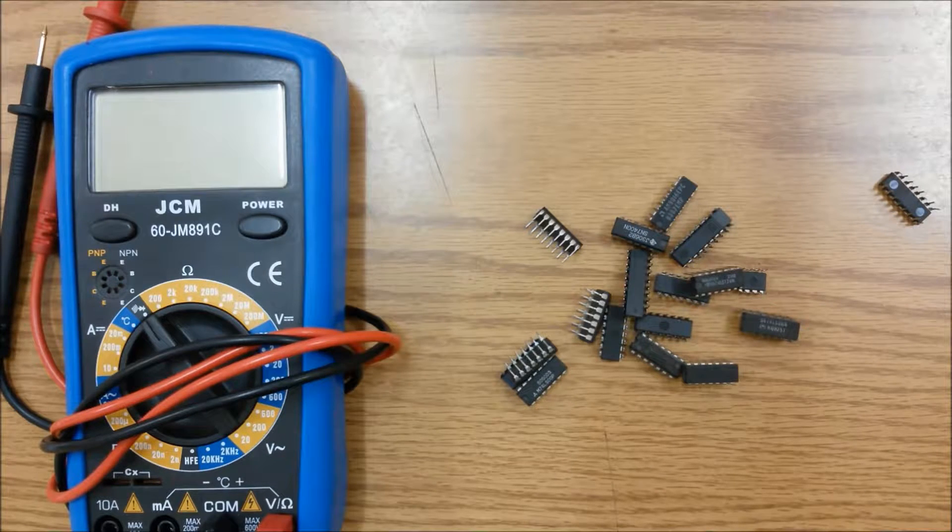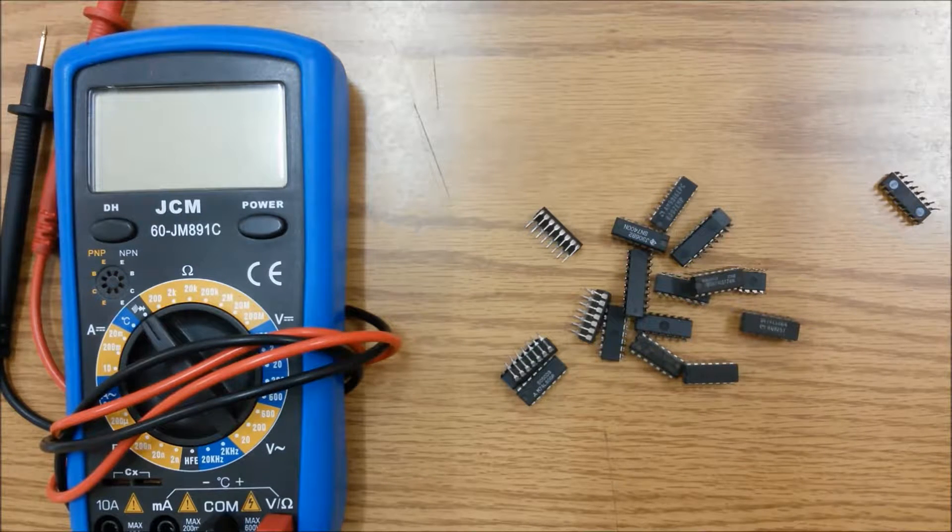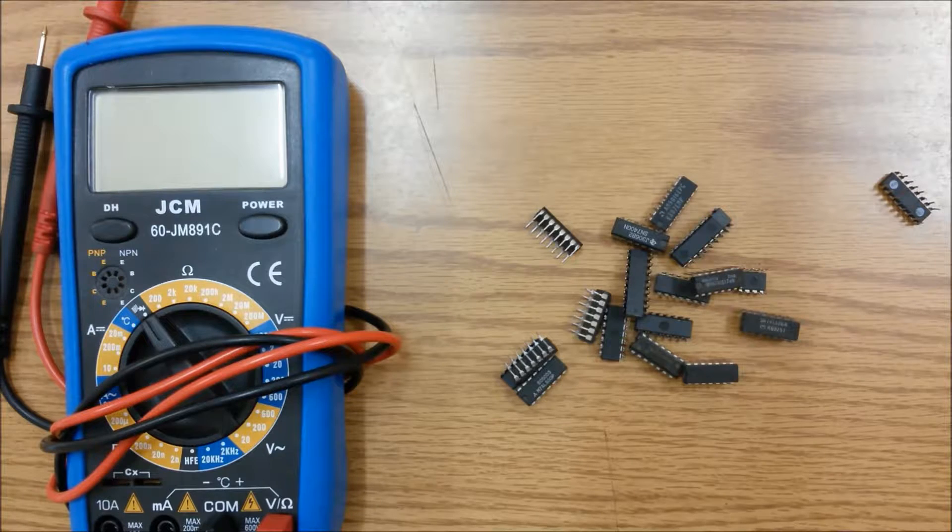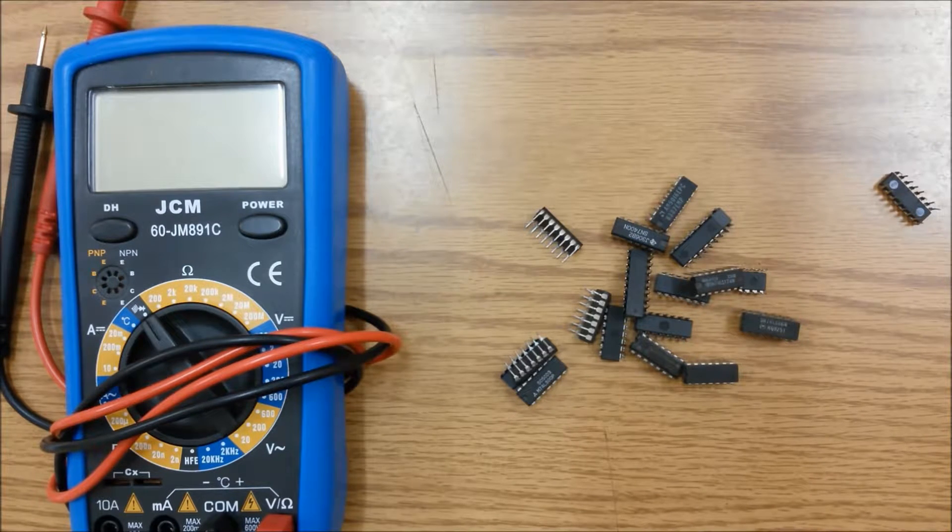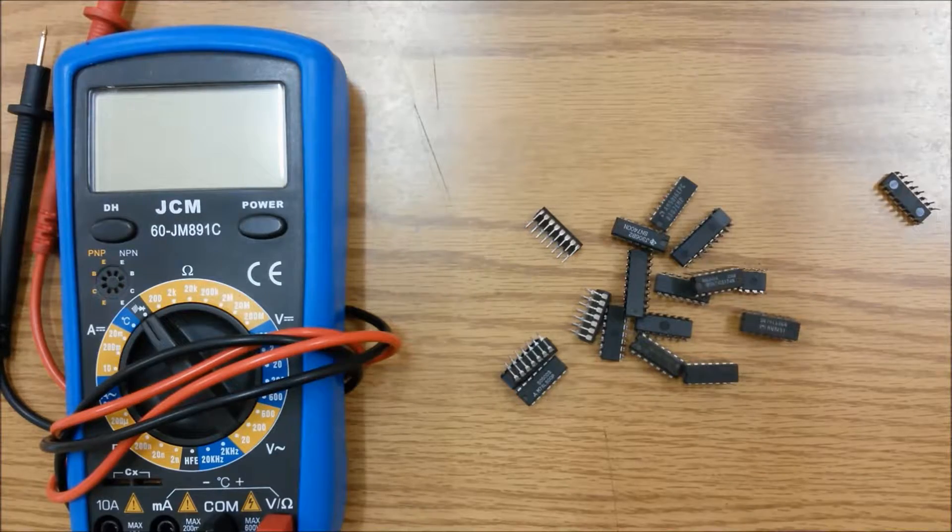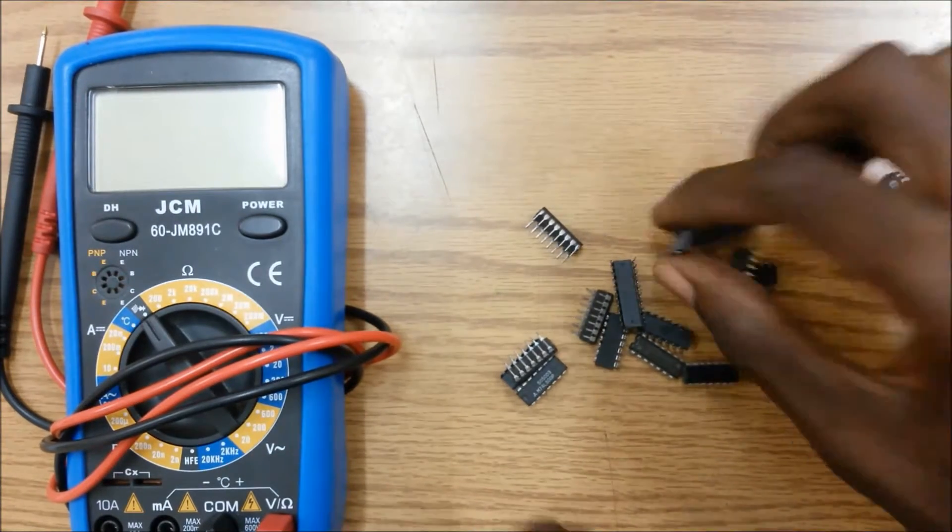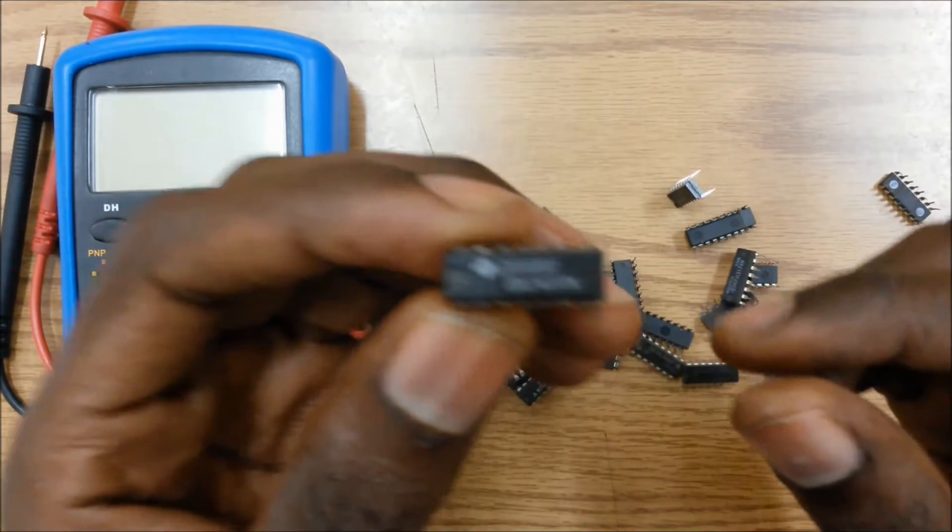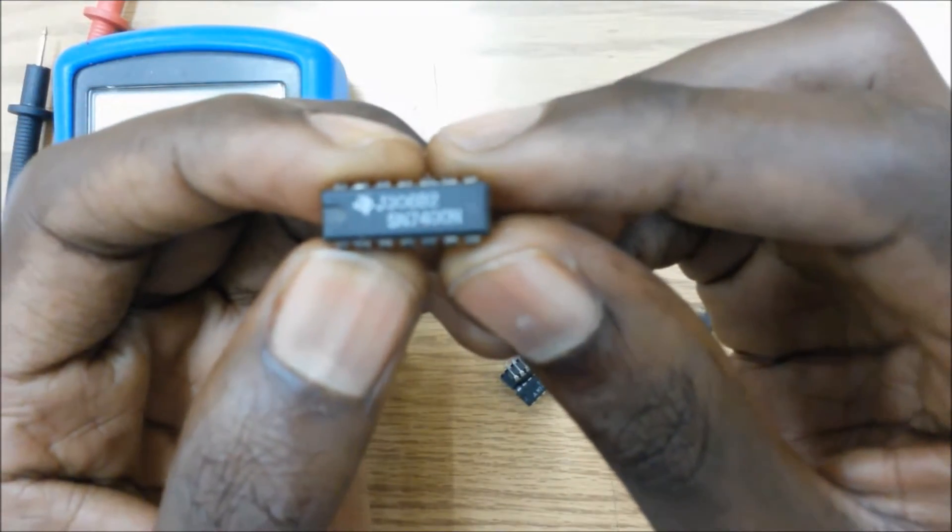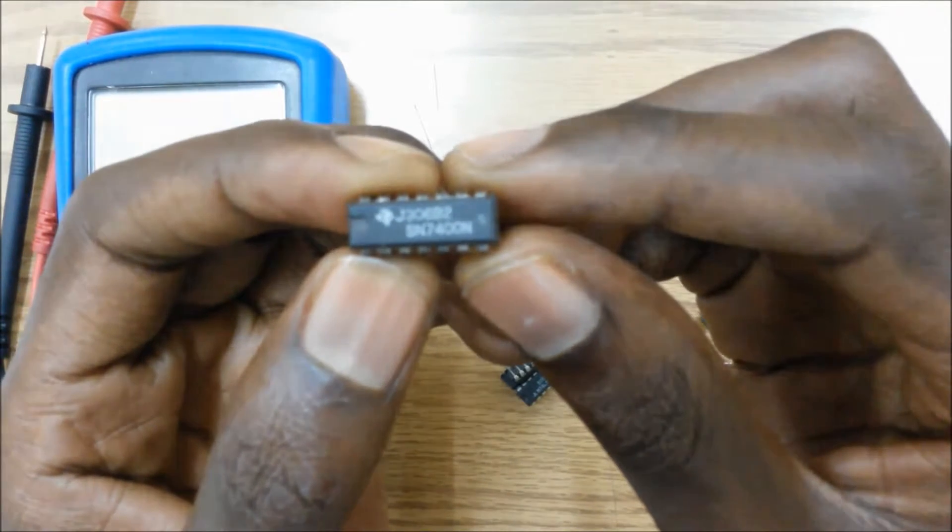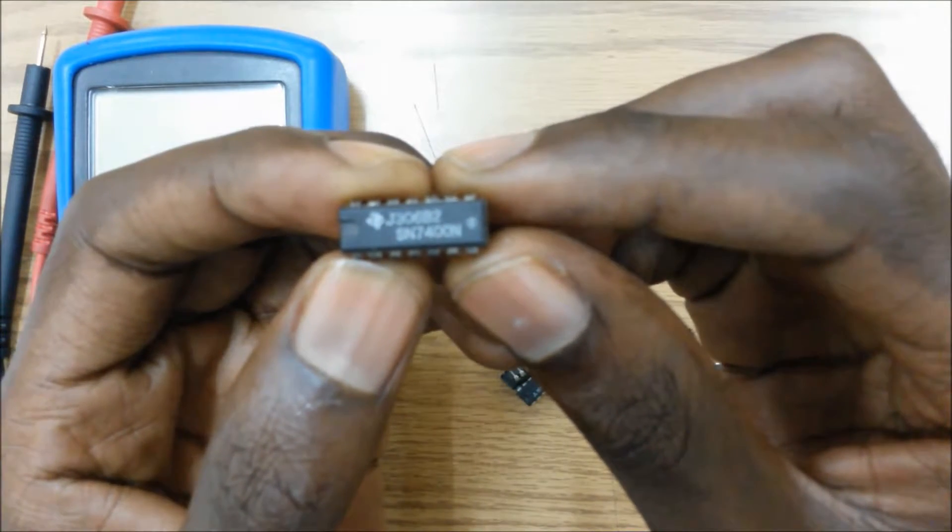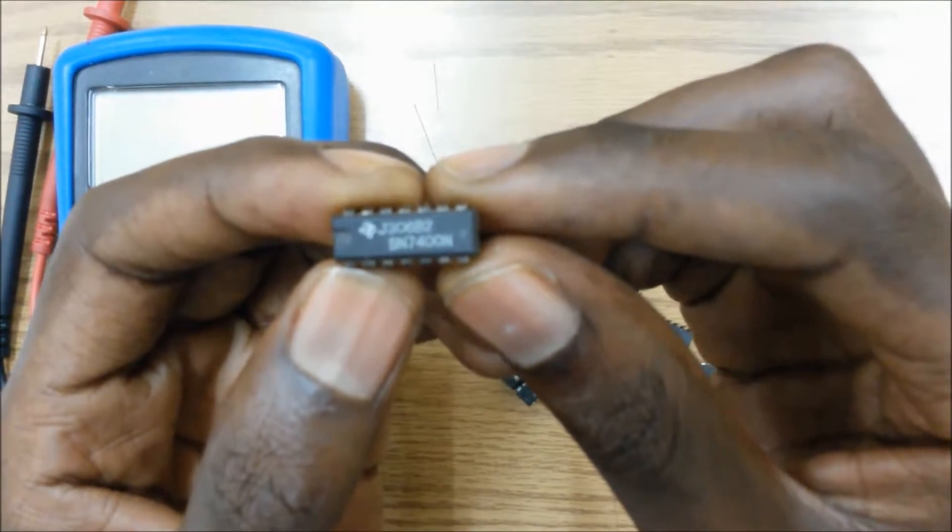So, the first thing you'd want to do when you actually pick up an integrated circuit is to check out the manufacturer's data sheet, which can be accessed online. So, let's say for this, for example, this integrated circuit here. So, this is a SN7400. Let's go online now to see what the manufacturer's data sheet says.